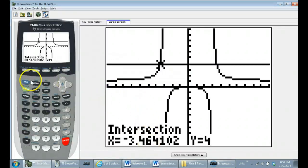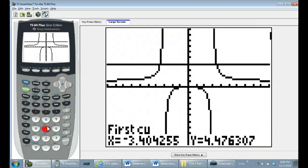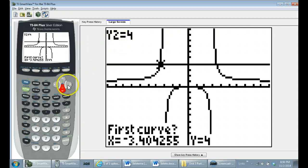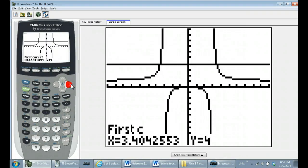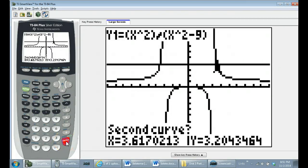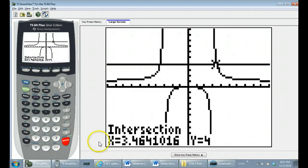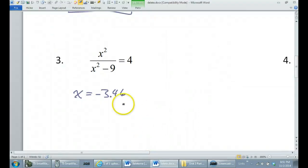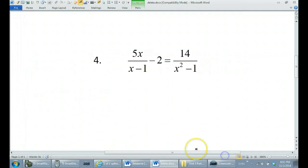And I will hit 2nd, trace 5 again. Once again, I will jump to y2 and I will slide on over to the other intersection point. And hit enter 3 times. 1, 2, 3. And positive 3.46. Okay, so that would be the solution to number 3.